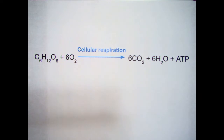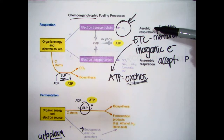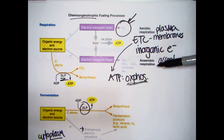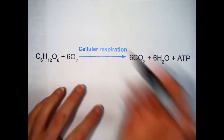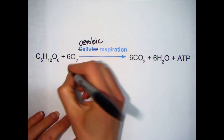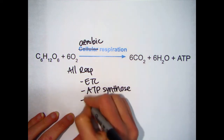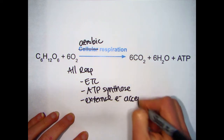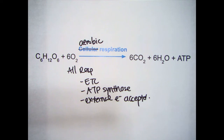In bacteria, there are two types of respiration. There's aerobic respiration, which has an oxygen electron acceptor, and there is anaerobic respiration, which has a non-oxygen but still external electron acceptor. And then at the bottom there is fermentation. So if you see an equation like this for bacteria, you're going to want to cross off 'cellular' and write 'aerobic,' because you need to remember that although all respiration has electron transport chain, ATP synthase, and external electron acceptor, all respiration in bacteria does not use oxygen as the external acceptor. It can be a different non-oxygen but still external electron acceptor for anaerobic respiration.